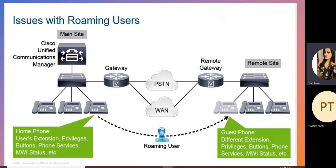Here we can see an example where in the main site there is a home phone with the user's extension privileges, buttons, phone services, MWI status, etc. When the user is roaming to another site — the remote site — they are on a guest phone with a different extension privileges, buttons, phone service, MWI status, etc.